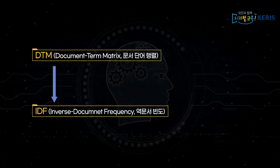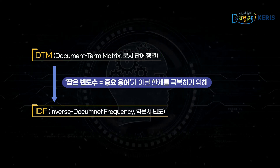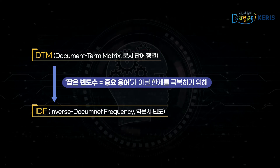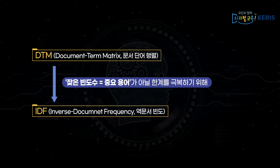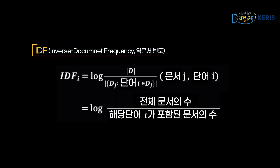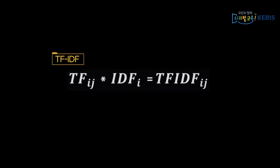이러한 한계를 극복하고자 특정 소수의 문서에만 등장하는 단어의 가중치를 반영해주는 IDF, 역문서 빈도를 활용하게 됩니다. IDF는 전체 문서의 수를 특정 단어가 등장하는 문서의 수로 나누고 로그를 취한 값입니다. 여기에 각 용어가 전체 문서에서 출현하는 비율인 TF를 곱한 값인 TF-IDF는 단순 키워드 빈도 값이 가지는 중요성 크기의 왜곡 문제를 해결할 수 있습니다.